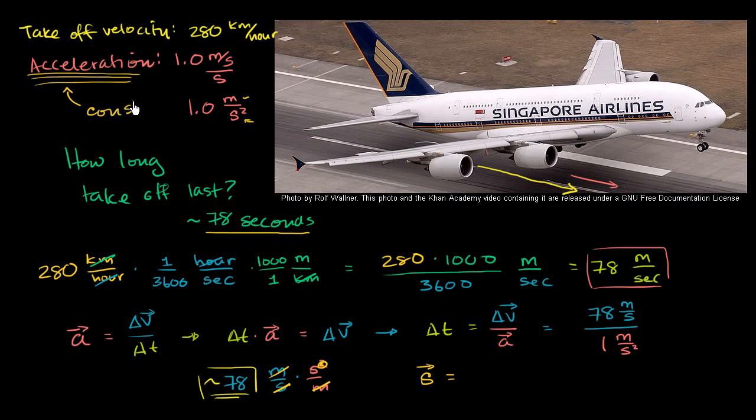So if you assume that your acceleration is constant, then you can come up with something called an average velocity. And the average velocity, if your acceleration is constant, if and only if your acceleration is constant, then your average velocity will be the average of your final velocity and your initial velocity.